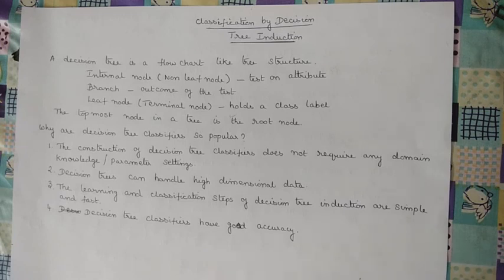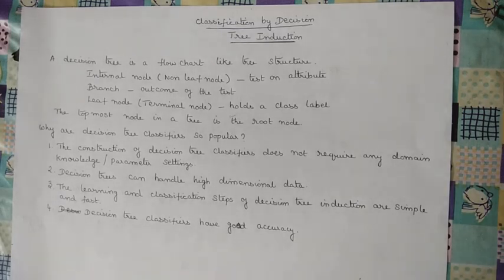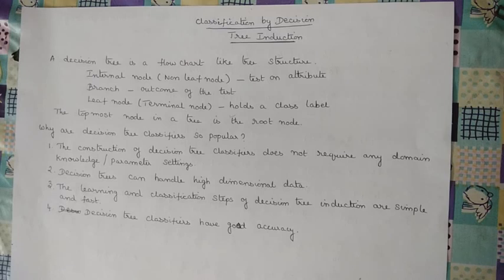Decision tree classifiers are popular because their construction does not require any domain knowledge or parameter settings. They can handle high-dimensional data, and the learning and classification steps are simple and fast, giving very good accuracy. Because of all these things we go for decision tree induction. When we construct the decision tree, we need to find out the root node.